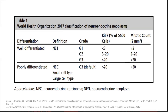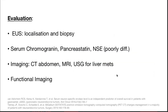WHO classification is again grade 1, 2, and 3 — well differentiated, and grade 3 is poorly differentiated also called neuroendocrine carcinoma. Mitotic count: less than 2, 2 to 20, and more than 20. For evaluation: endoscopic ultrasound, serum chromogranin A levels, and pancreastatin. Imaging: multidector CT abdomen is the best imaging modality along with MRI, and ultrasound for liver mets; functional imaging can also be done.